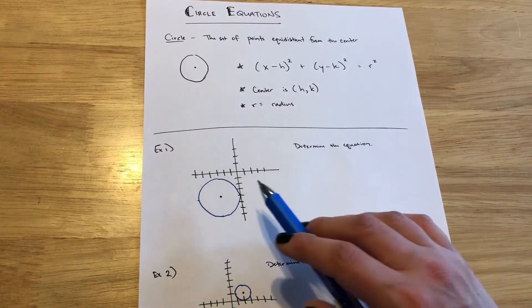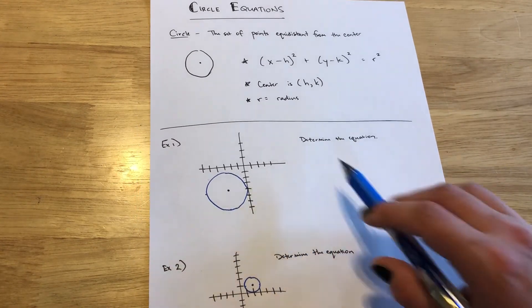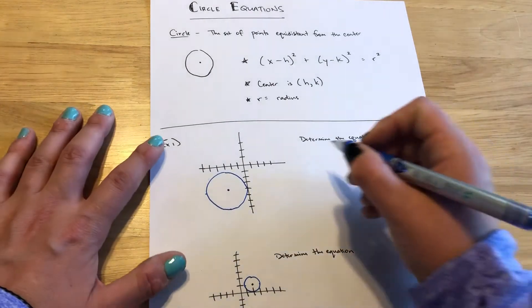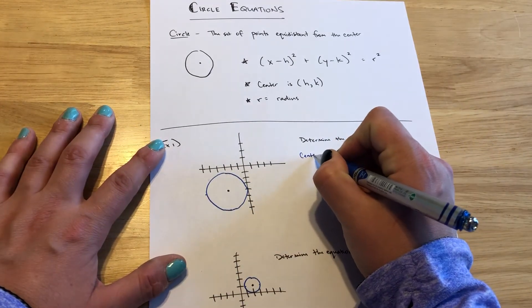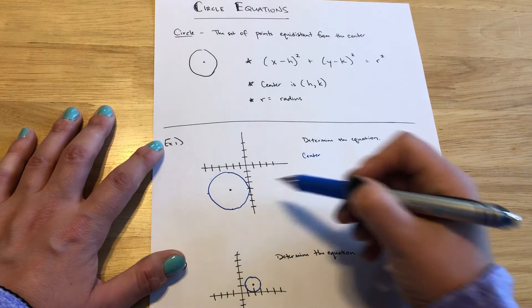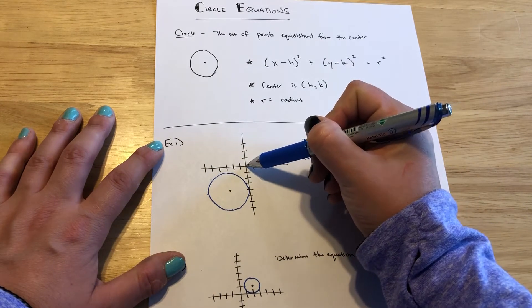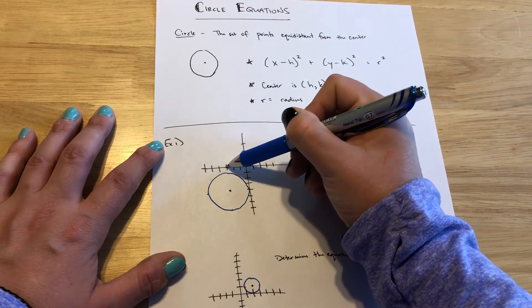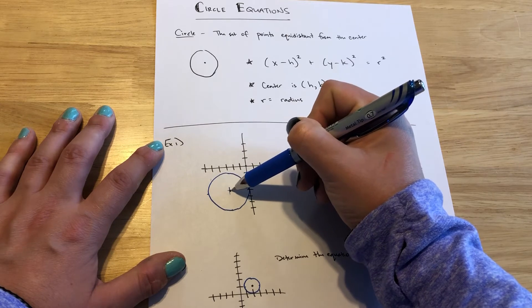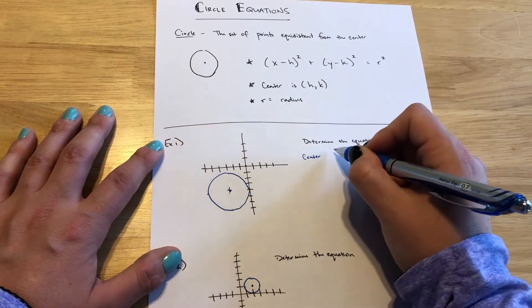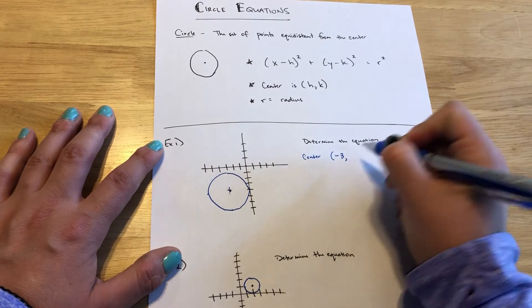So if we see a picture like in example 1 and our job is to determine the equation, the first thing that we want to do is locate the center. So thinking about our coordinate plane and how we start at the origin, if I count to the left 1, 2, 3, that's what puts me in line with that center. So the x value is negative 3.